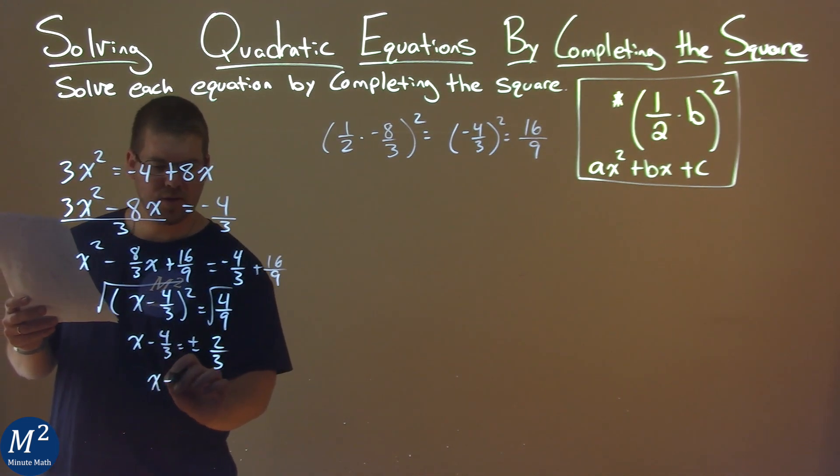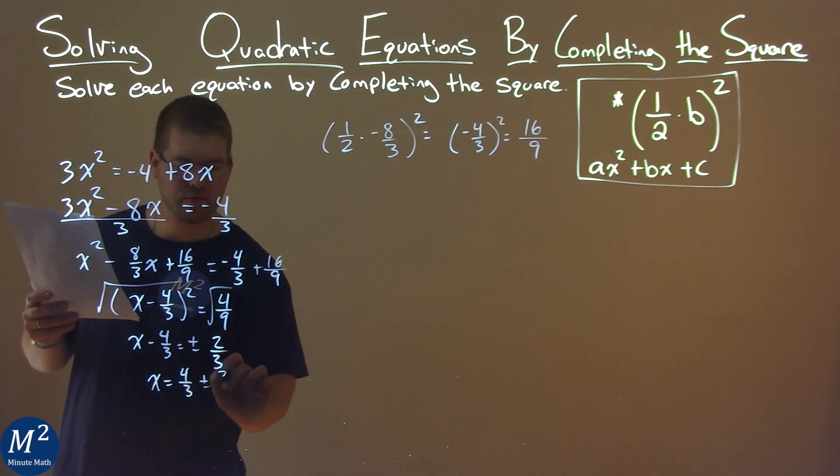Add 4/3 to both sides, we have x equals 4/3 plus or minus 2/3.